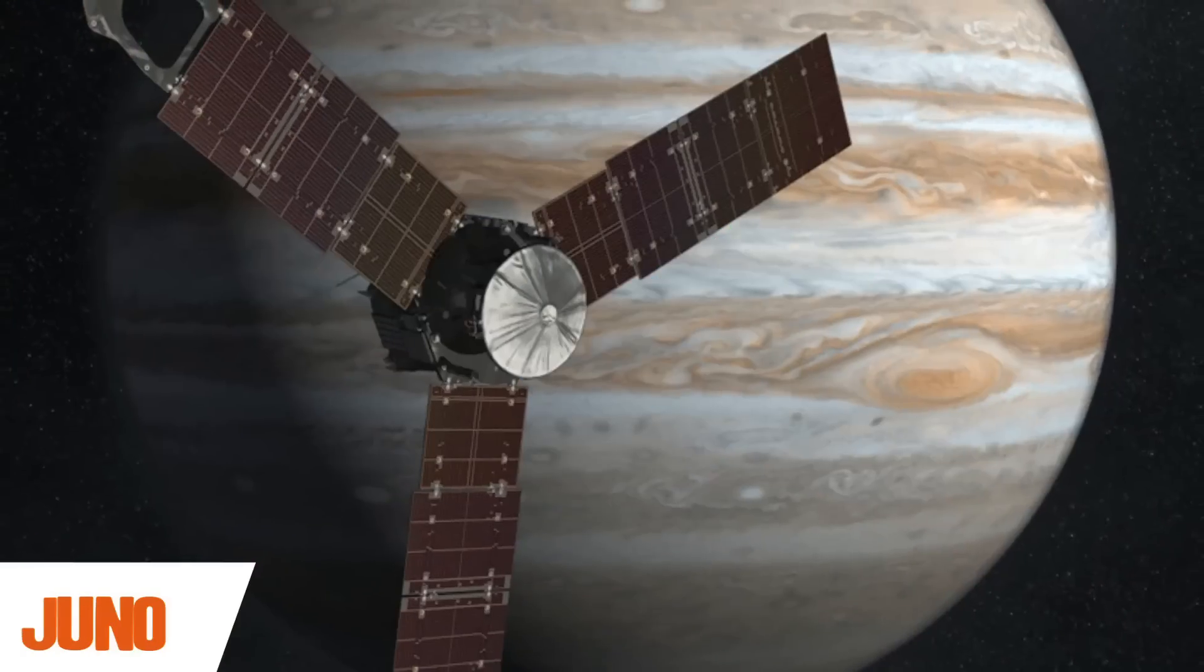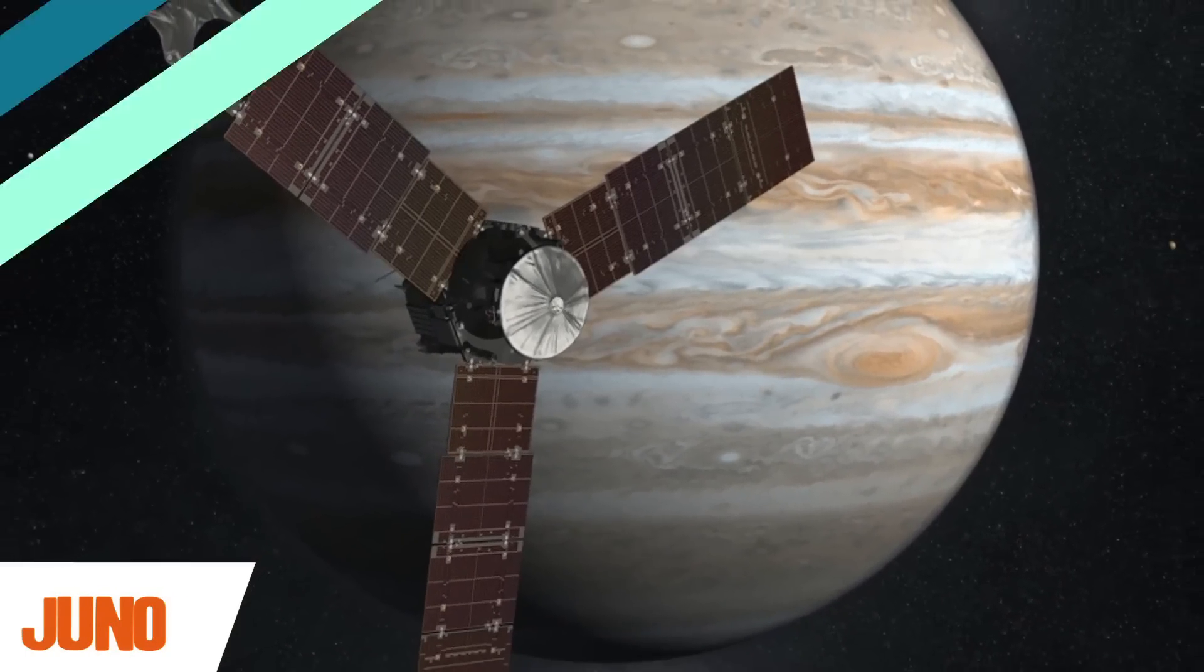Number two, Juno. Launched in 2011, is en route to Jupiter, where in August 2016, it will begin the first of about 33 orbits designed to collect data about the gas giant's structure and how it formed. As you know, Jupiter doesn't have a solid surface, its atmosphere is mostly hydrogen and helium that gets denser with depth.